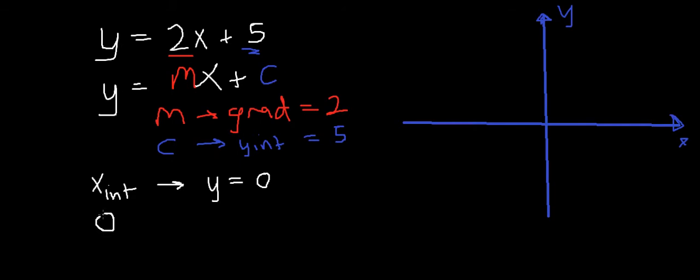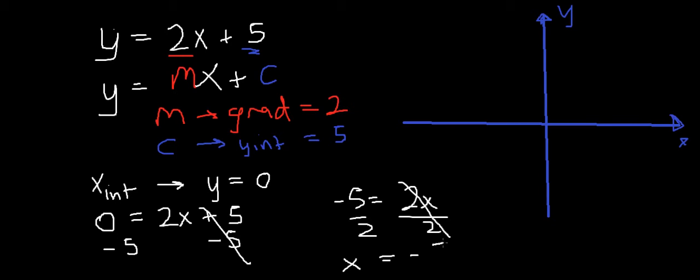We can put y in as 0. So this becomes 0 equals 2x plus 5. Minus 5 to both sides, we get minus 5 equals 2x. Then divide both sides by 2. We get x equals negative 5 over 2. So we've found our x-intercept. We already had our y-intercept, which was 5, and our gradient.